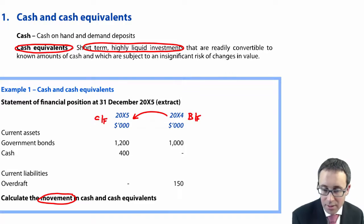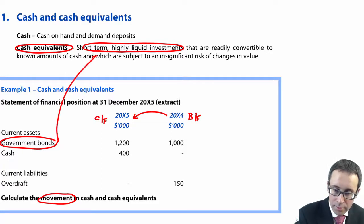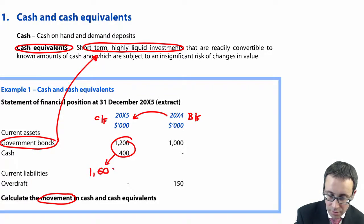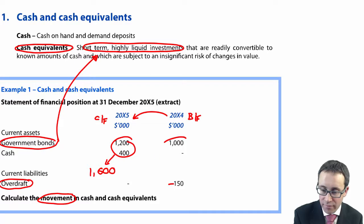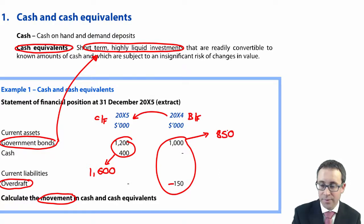So, I have my brought forward on the right, carry forward on the left. And you can see here that you have a government bond. And a government bond is a short-term, highly liquid investment. So, it's a cash equivalent. So, what we have there is that we can see that my carry forward is 1,600. Just be careful because when you look at your cash on demand, the cash on demand in the previous year is an overdraft. So, that is negative cash. So, you take the 1,000 and you deduct the 150. And in doing so there, does that give me 850. So, we had 850 of cash and cash equivalents last year. Remember, deduct the overdraft to get your cash figure. And then, in the current year, X5, you have 1,600.